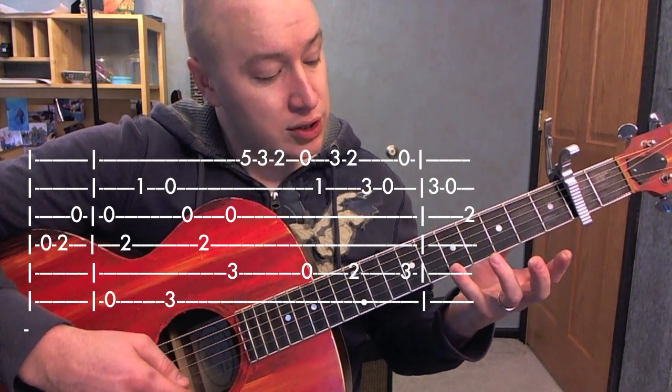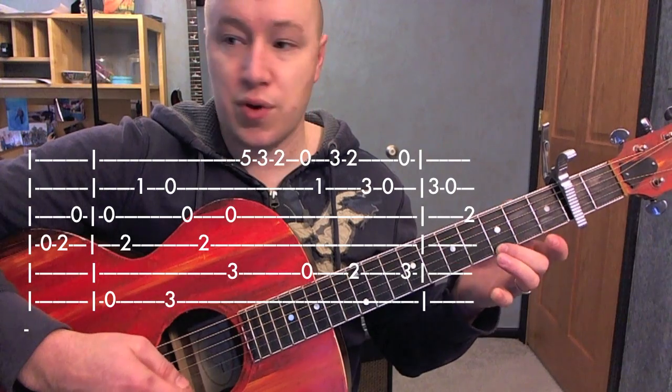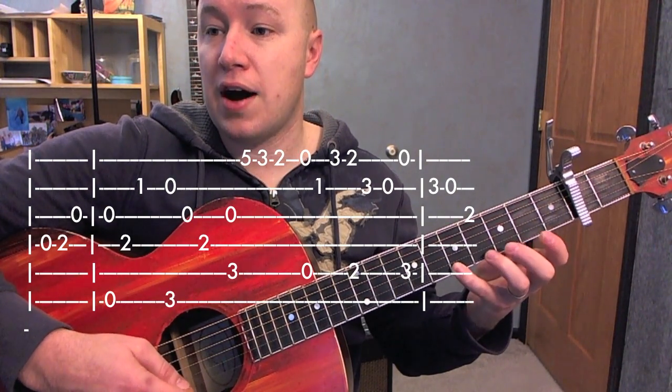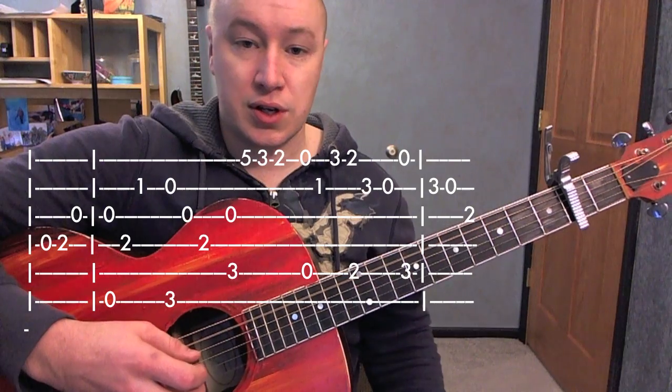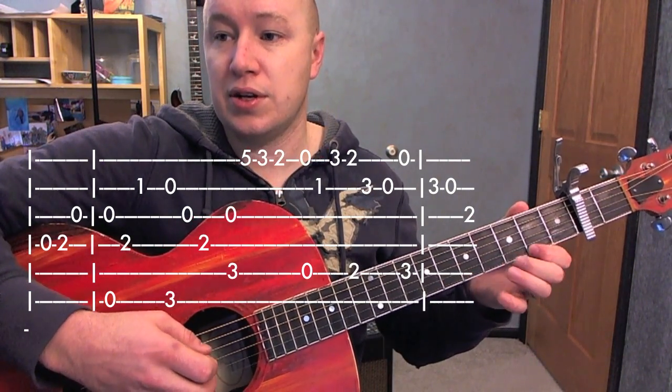The next section is starting from 5 relative to the capo. 5, 3, 2 on the 1st string. 5, 3, 2. 0 on the 1st and 0 on the 5th. 5, 3, 2.